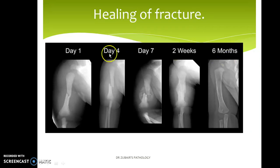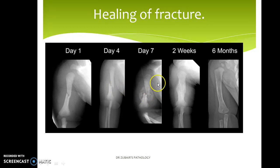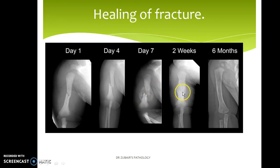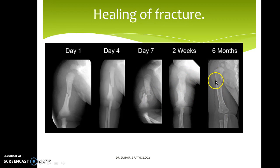Here is an example showing how the fracture, which was displaced, progresses. You can notice that there is callus formation. The procallus becomes osseous callus, and this undergoes remodeling in about six months.